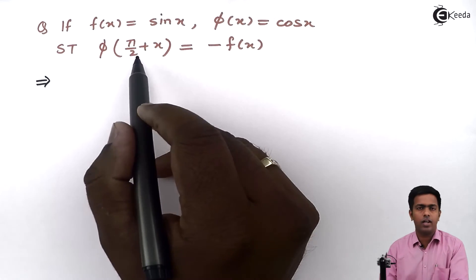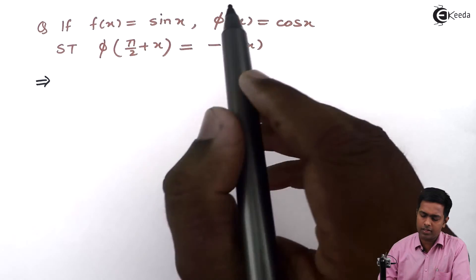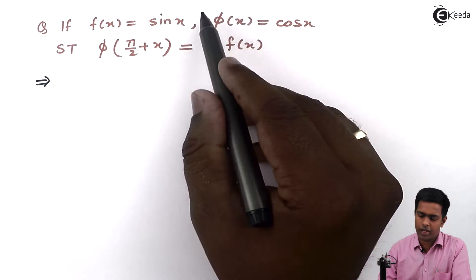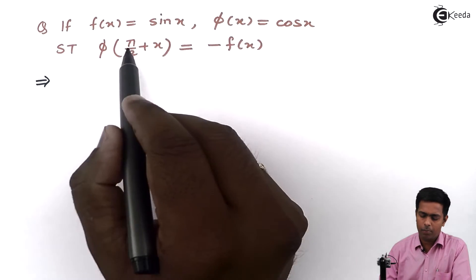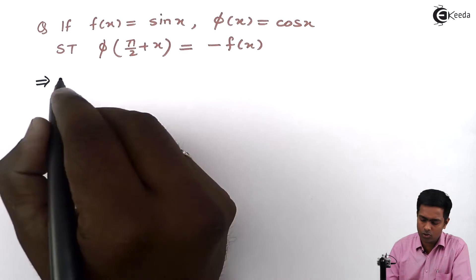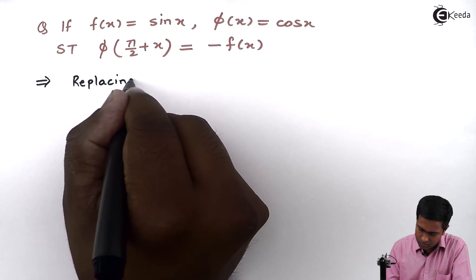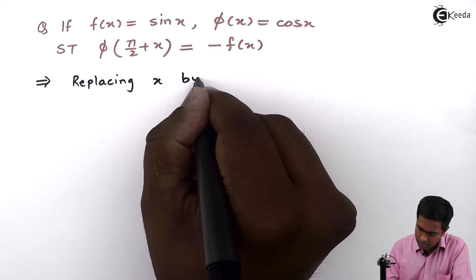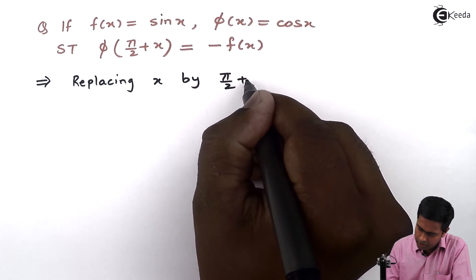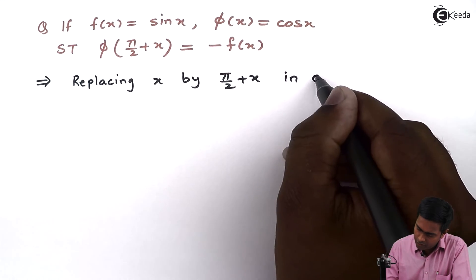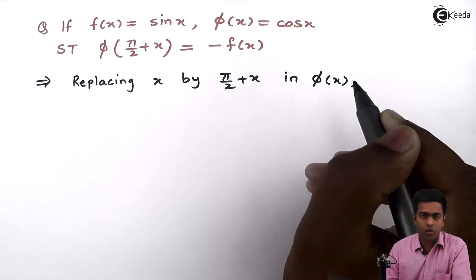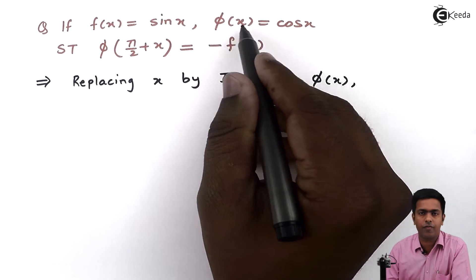So to find this value, I will replace x of this φ(x) by π/2 + x. So I will say, replacing x by π/2 + x in φ(x). So here I am using this second function φ(x).